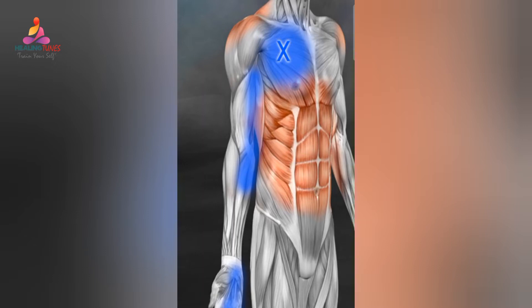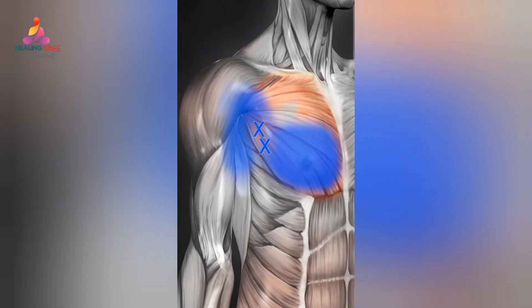Trigger points in this muscle group tend to activate trigger points in the upper back muscle that produce pain between the shoulder blades. Patients with active pectoralis major trigger points will present with chest pain, front shoulder pain, and pain travelling down the inside of the arm to the elbow. If this referred pain occurs on the person's left side, it can be confusingly similar to cardiac pain. If you have chest pain, please see a cardiologist to rule out cardiac involvement before investigating trigger points as the source.